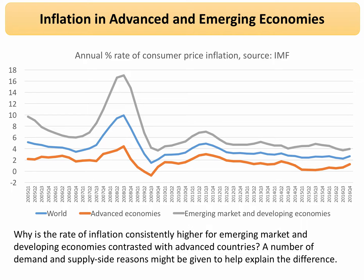It shows the annual rate of inflation for the world economy, which is bumping along about 2 or 3 percent. Advanced countries like Japan and Germany and the UK have much lower inflation — indeed some deflation in 2009, close to zero in some cases. And the grey line shows average inflation for the main emerging market and developing countries, including countries like China, Vietnam, Bangladesh, and a lot of sub-Saharan African countries.